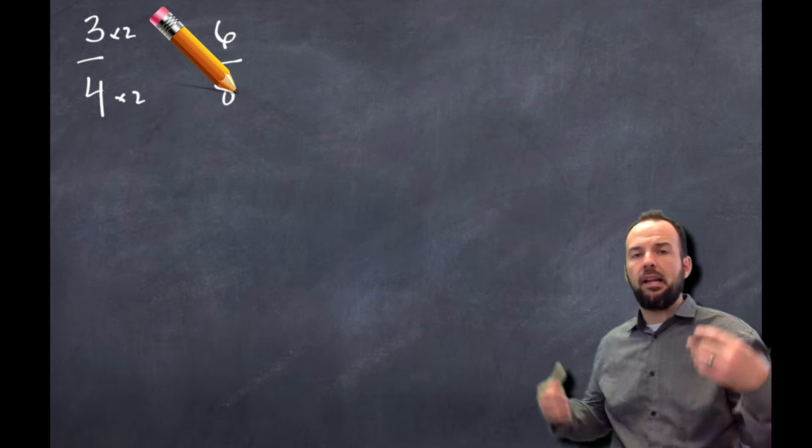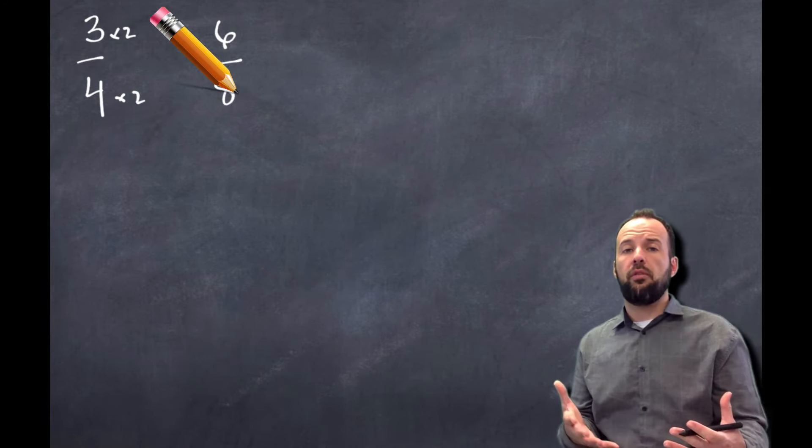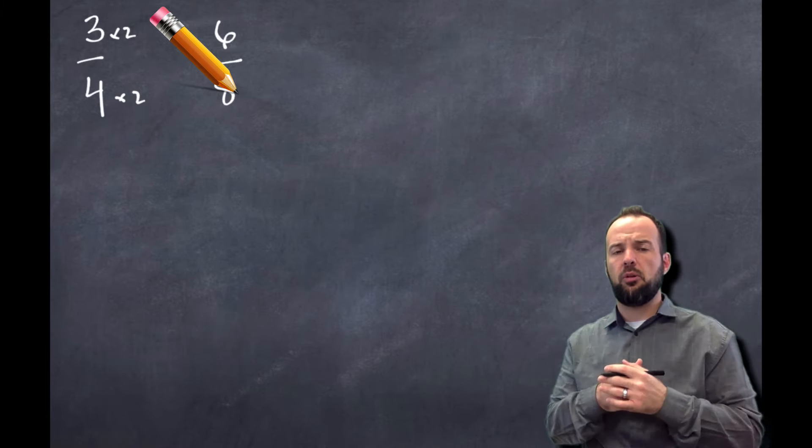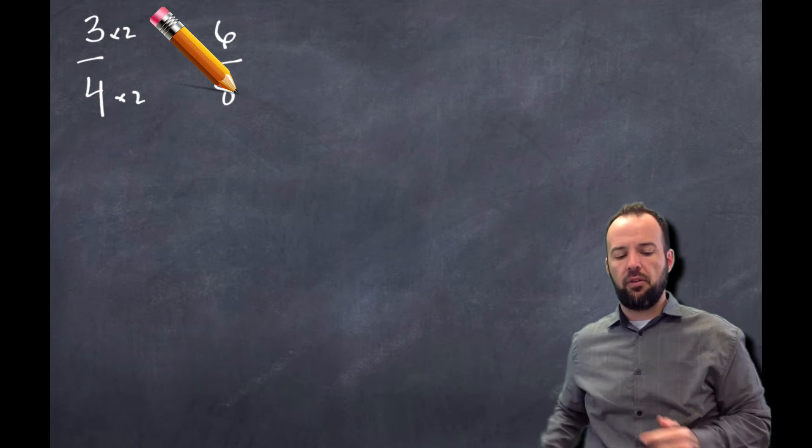3 times 2 would give me 6, right? 4 times 2 would give me 8. So there we go. So these are equivalent fractions because I was able to multiply both my numerator and denominator by the same number to get that other fraction.